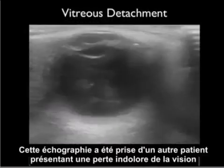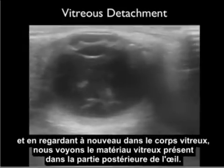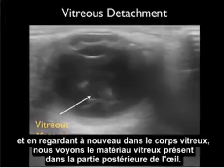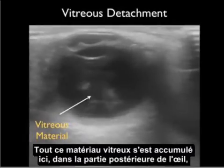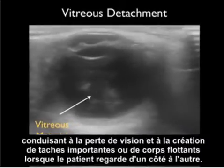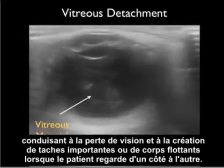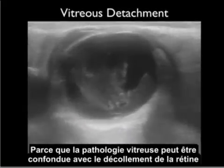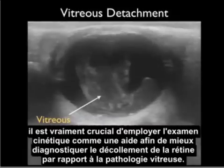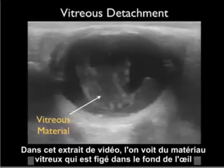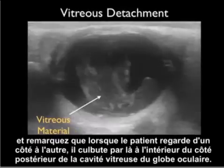This ultrasound was taken from another patient with painless loss of vision. Looking into the vitreous body, we see vitreous material present within the posterior aspect of the eye — the classic appearance of vitreous detachment, where all that vitreous material has accumulated, leading to vision loss and prominent floaters as the patient looked from side to side. Because vitreous pathology can be confused with retinal detachment, it's crucial to employ the kinetic examination to best diagnose retinal detachment versus vitreous pathology.